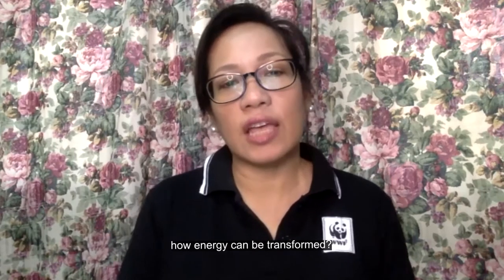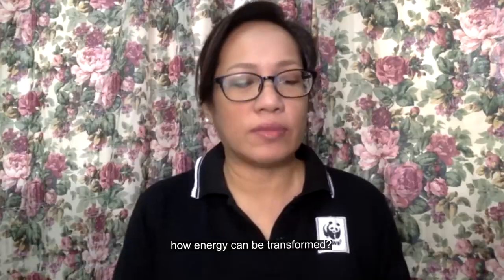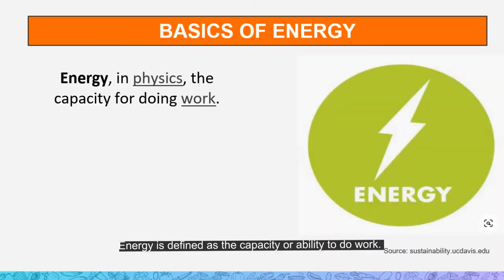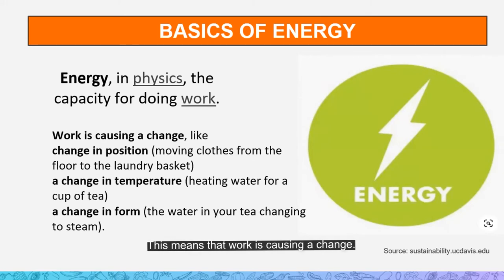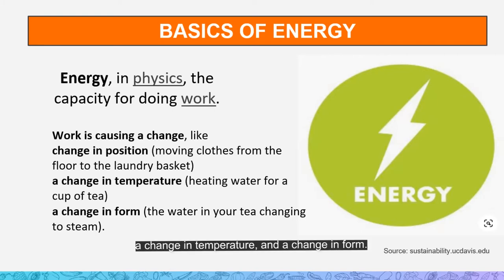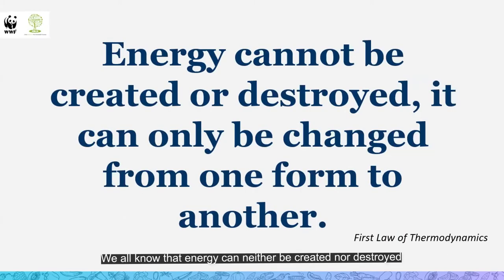How can energy be transformed? Energy is defined as the capacity or ability to do work. When we say work, this means causing a change — a change in position, a change in temperature, and a change in form.